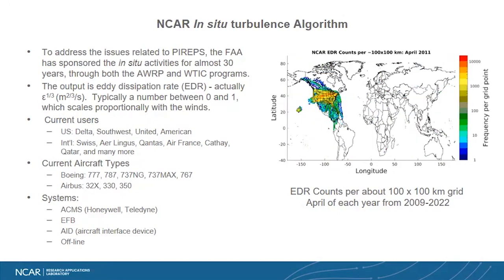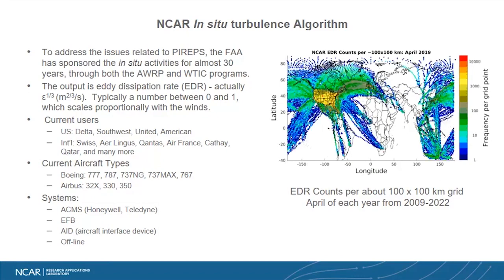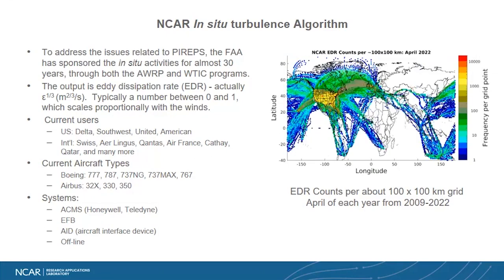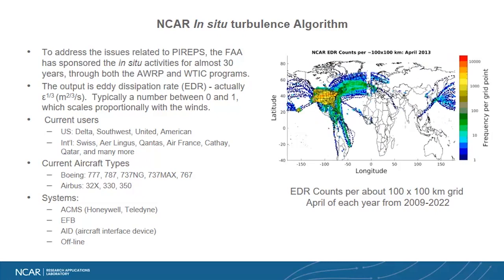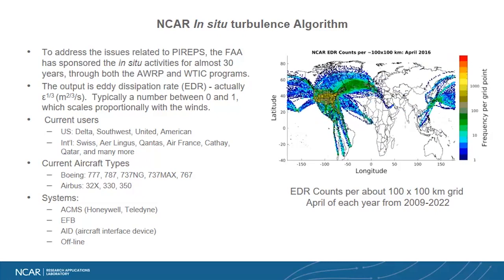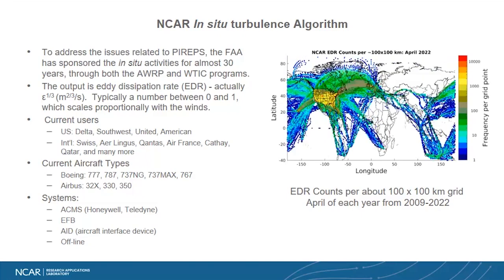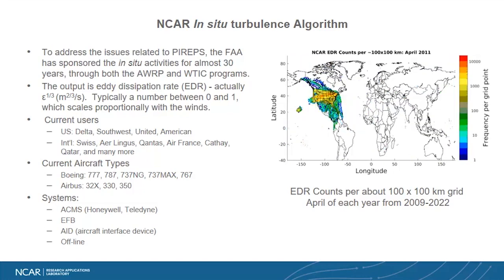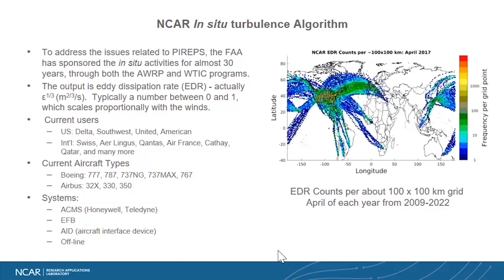EDR is deployed on a series of systems. The most common is the ACMS — the Aircraft Condition Monitoring System — by Honeywell Teledyne. The A350s, for example, have it on a different box called SageM. EFBs and AIDs are also used; Aer Lingus, for example, runs the software on their EFB. It's also available offline.